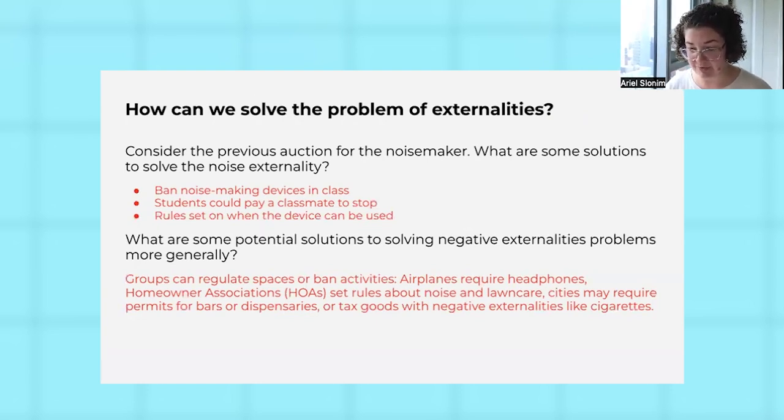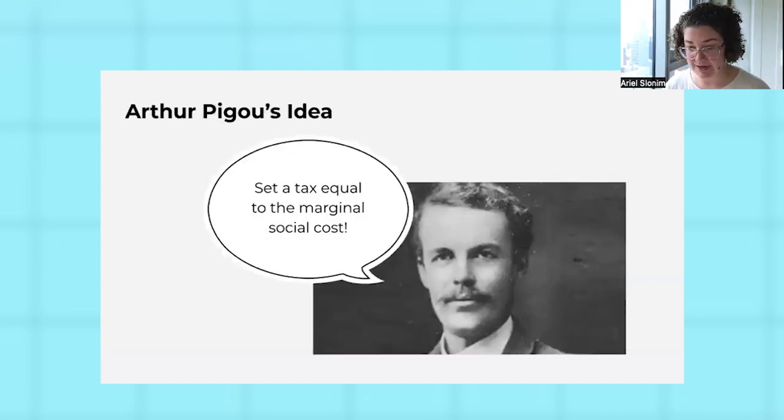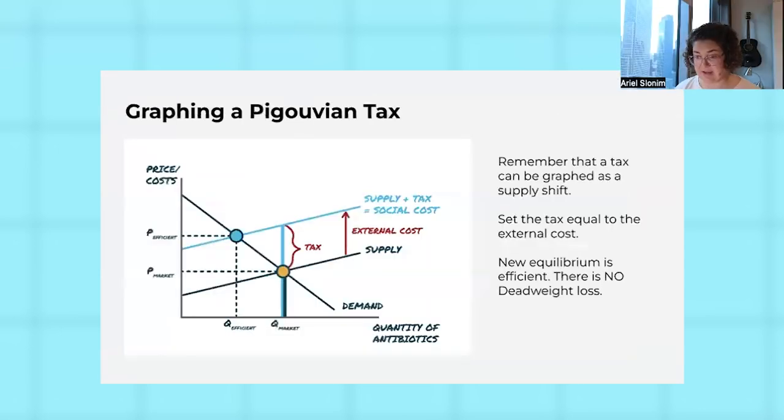We transition to Pigou. He says set the tax equal to the marginal social cost, and here is your graph of a Pigouvian tax. We've got our graph where the supply plus the tax is equal to that social cost, so there's no deadweight loss.